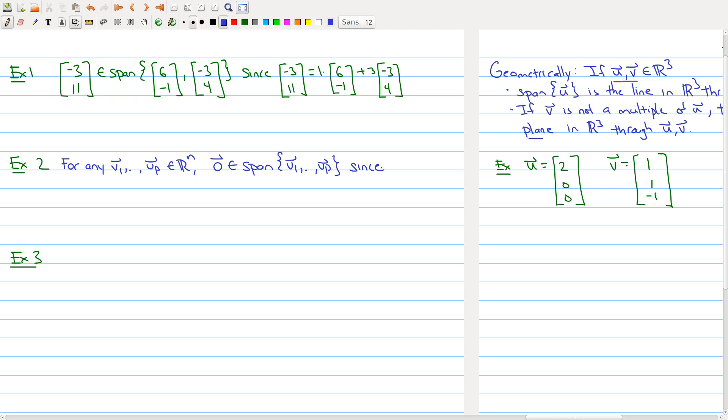Why is that? Because zero can always be written as a linear combination of any collection of vectors. You can write the zero vector as zero times the first vector plus zero times the second vector all the way up to zero times the last vector. So no span is ever empty—it always contains at least the zero vector.